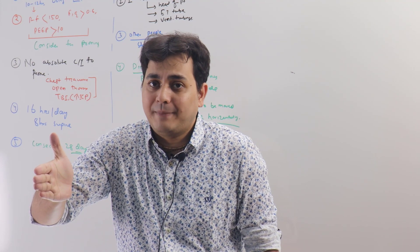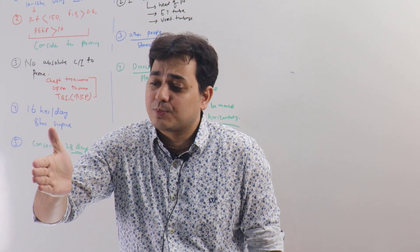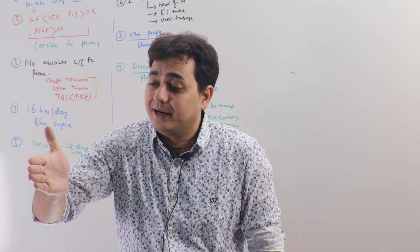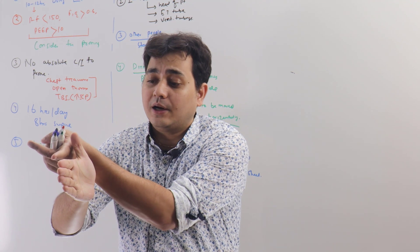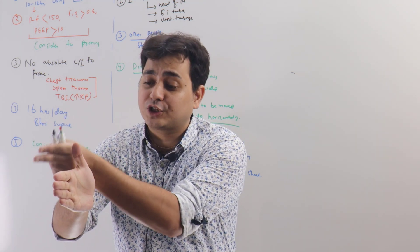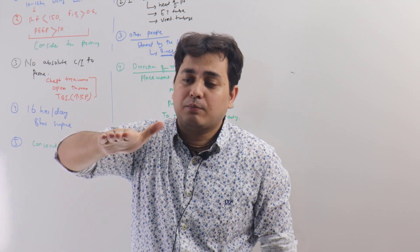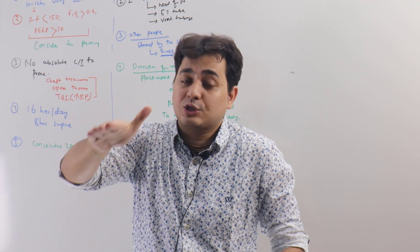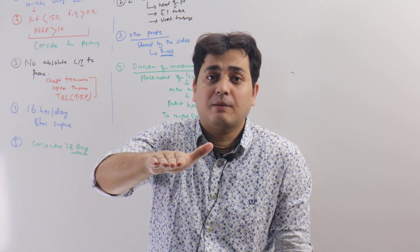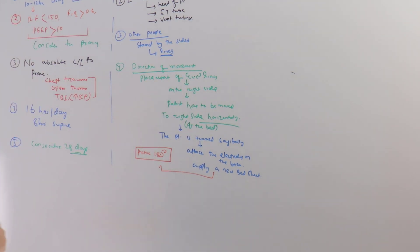Now the patient is in a transverse position in relation to the bed of the hospital. Because the patient is in a transverse position, now we can attach the electrodes on the back side and put a pillow, put a fresh bed sheet, and then we can 180 degree prone the patient. Now the patient will automatically come to the middle of the bed. In this way we do it.